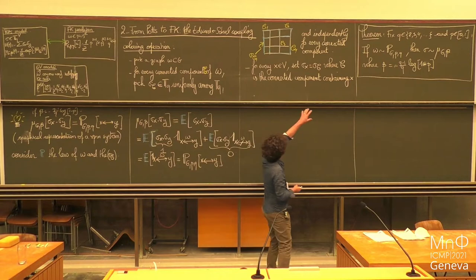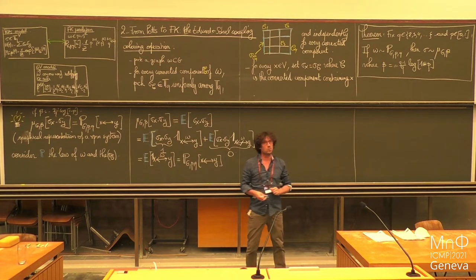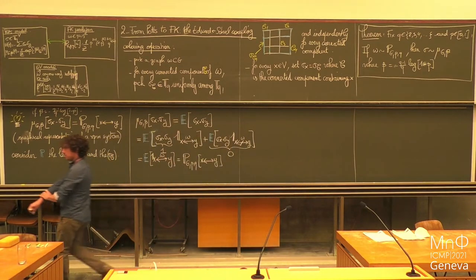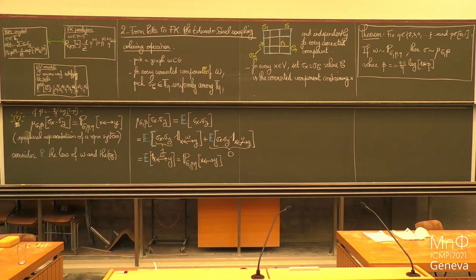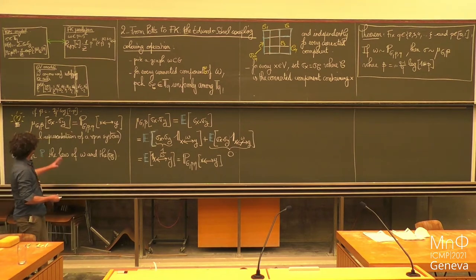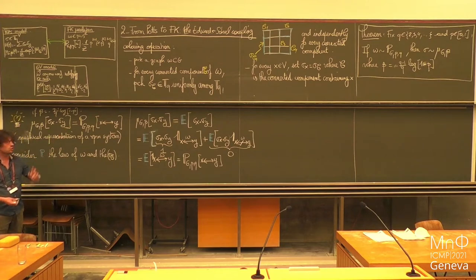What do you end up with? The expectation of the indicator that x is connected to y in omega — which is exactly the probability that x is connected to y, since omega is sampled with the law P_GPQ. That's how you get this result, and you see it's very straightforward once you have the theorem.